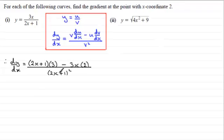Now let's just tidy this up. If we expand this bracket out we've got 6x plus 3, and then we're going to subtract 6x. So all we're left with then is just 3 divided by 2x plus 1 all squared.